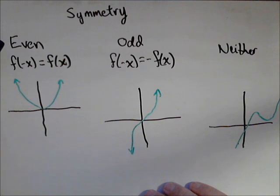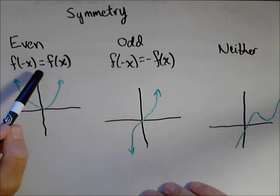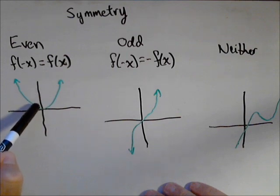So first off, if a function is even, that means that f of negative x equals f of x. So if we change the sign on the input, we still get the same output. And we say that the function has y-axis symmetry.